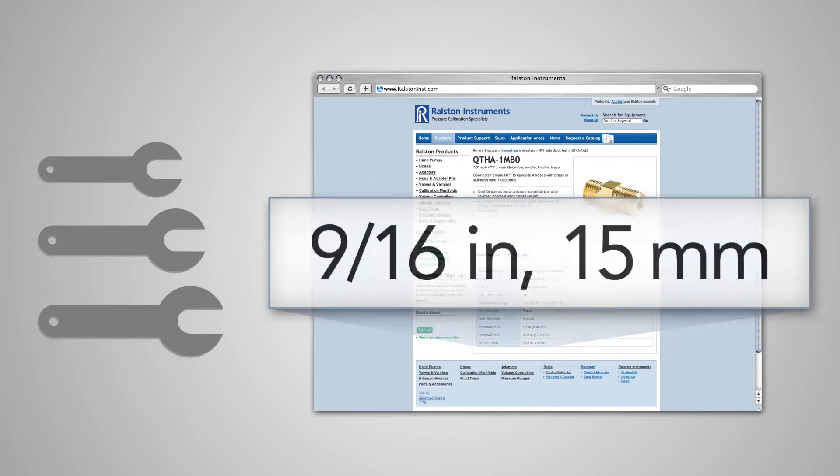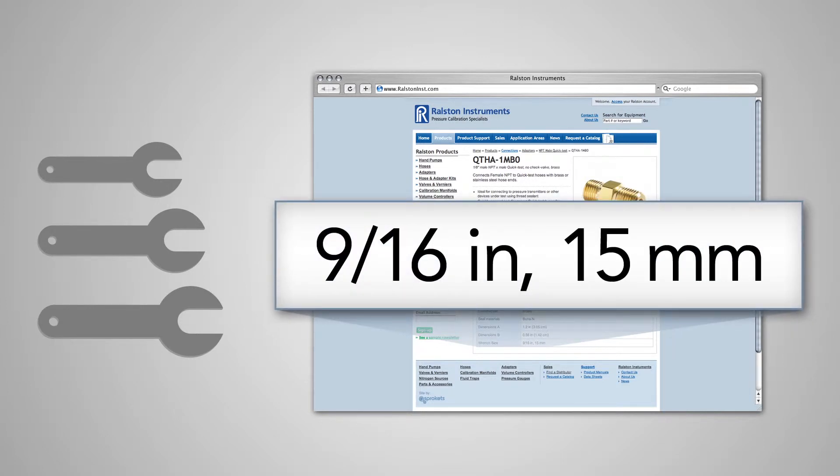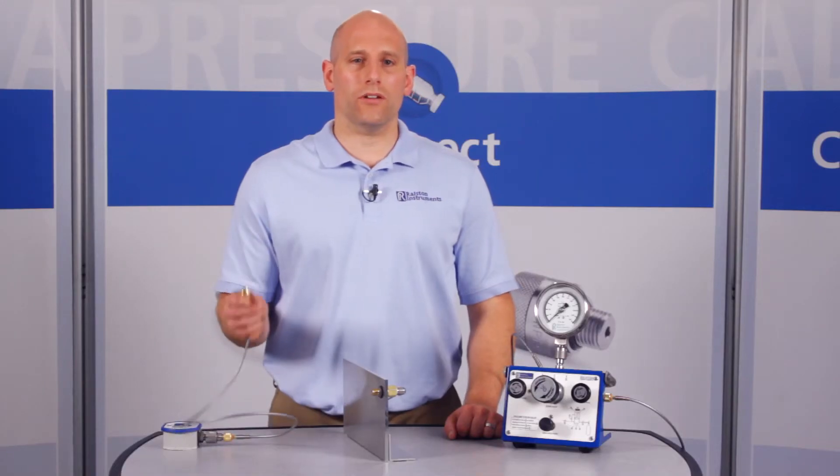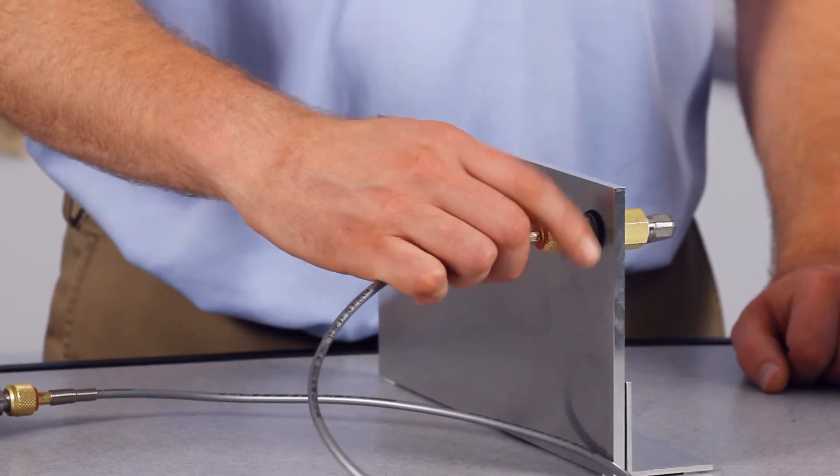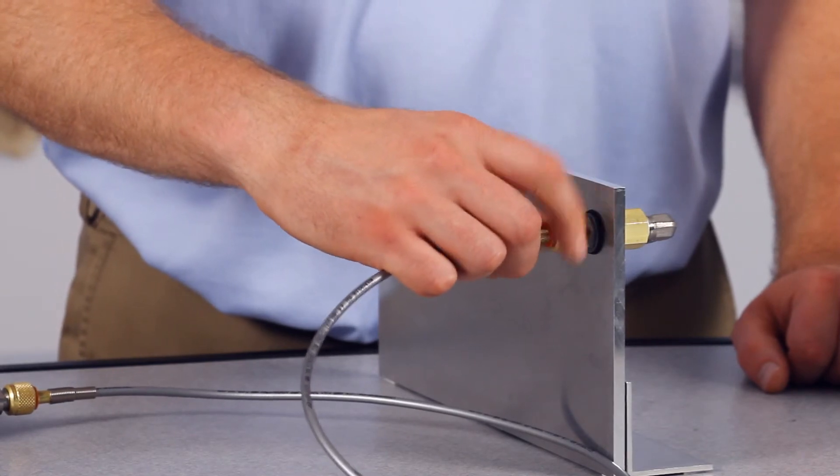Refer to our website or catalog for specific wrench sizes to go with each adapter so you know which wrenches to have handy. Now you can connect a quick test hose on the outside with just your fingers and quickly create a leak-free connection without thread tape or wrenches.